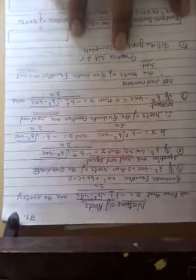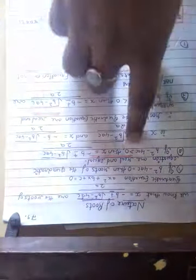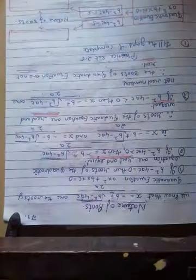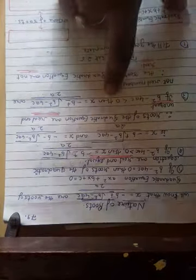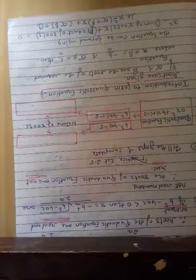तो चलो summary: b² - 4ac equal to 0 रहेगा तो real and equal; greater than 0 रहेगा तो real and unequal; और b² - 4ac छोटा होगा 0 से तो not real. अब हम लोग solve करने की कोशिश करते हैं।